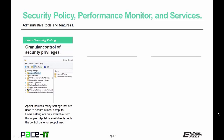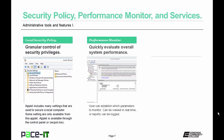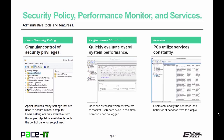Now let's move on to security policy, performance monitor, and services. Local security policy gives granular control of security privileges — it includes many settings to secure the local computer, and it's available through the Control Panel or through secpol.msc. Performance monitor quickly evaluates overall system performance; the user can establish which parameters to monitor, and it can be viewed in real time or logged for viewing in Event Viewer. The services applet lets users modify the operation and behavior of services — you can shut them down, start them, and so on.